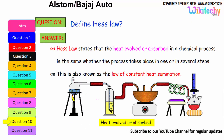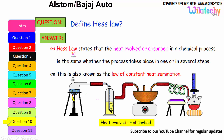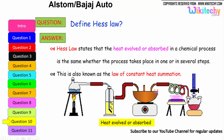Define Hess's Law. Hess's Law states that the heat evolved or absorbed in a chemical process is the same whether the process takes place in one step or in several steps. This is also known as the law of constant heat summation.